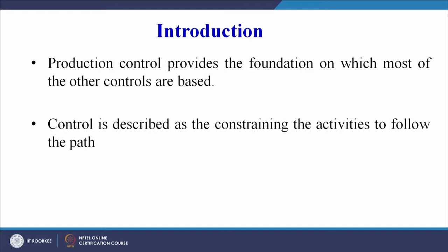This control function will help us achieve our target. Production control provides the foundation on which most other controls are based. Control is described as constraining the activities to follow the planned path. For example, when we are driving on a road, the vehicle must maneuver on the road only. If the vehicle tends to go off the road, that is when we have to restrain — constrain the steering so that we move on the road only. This is the control being exercised.